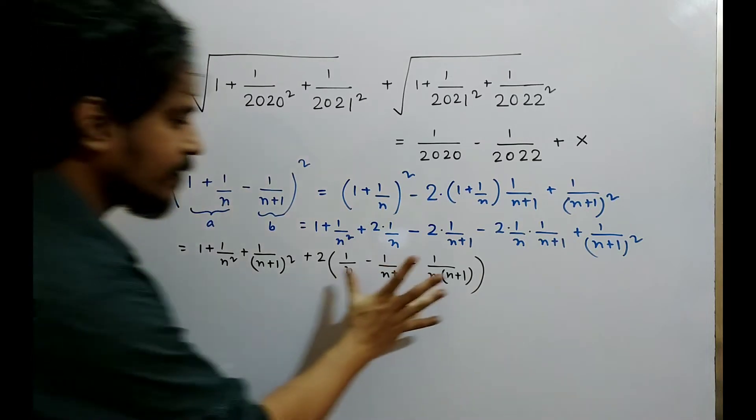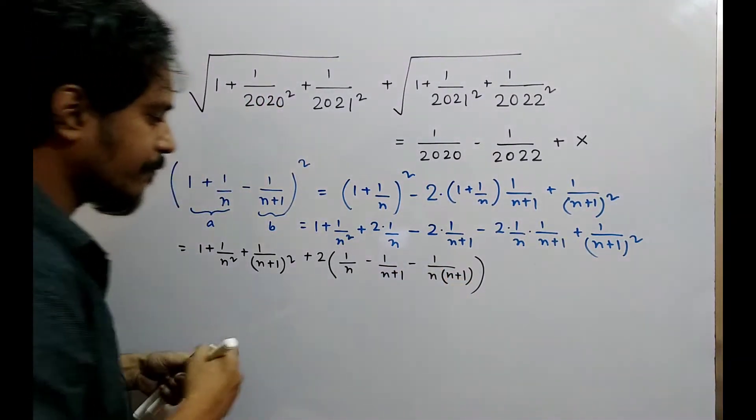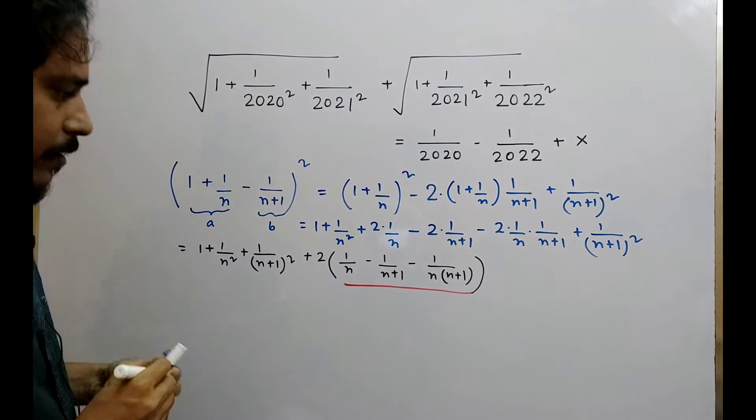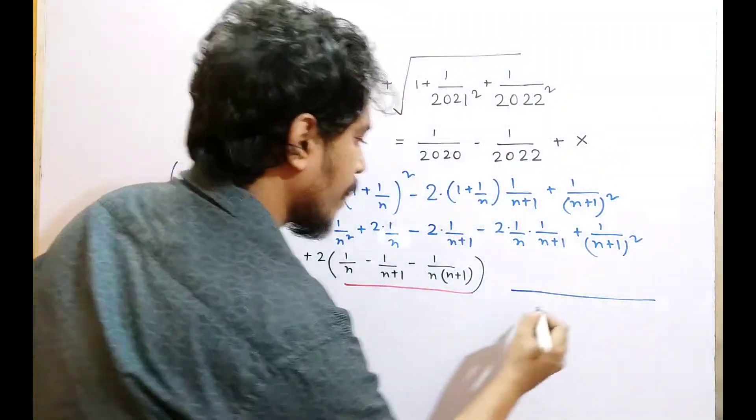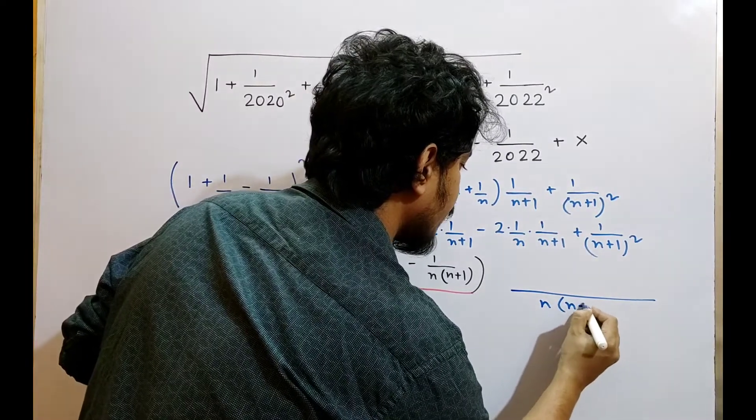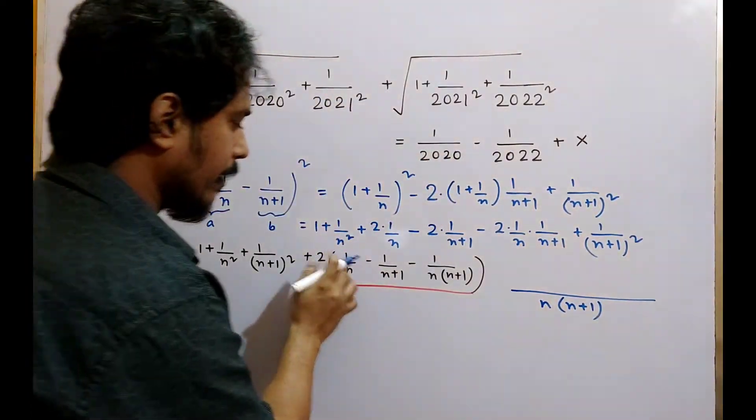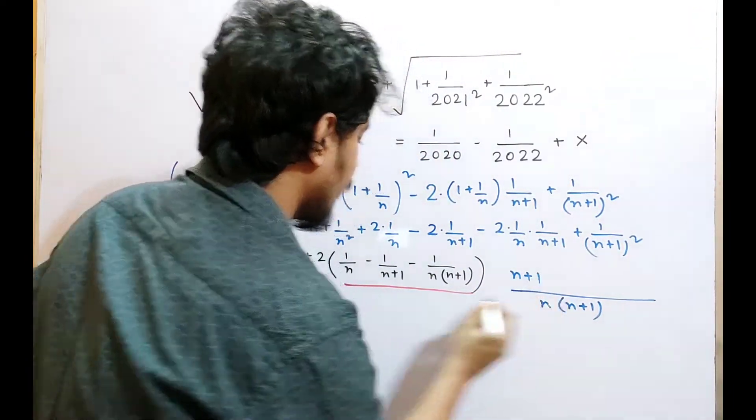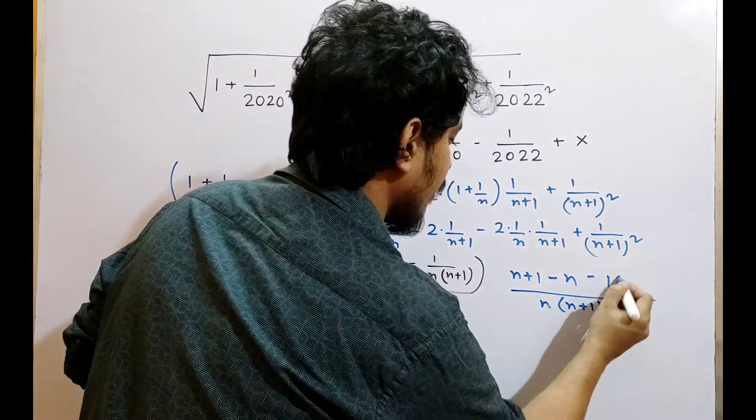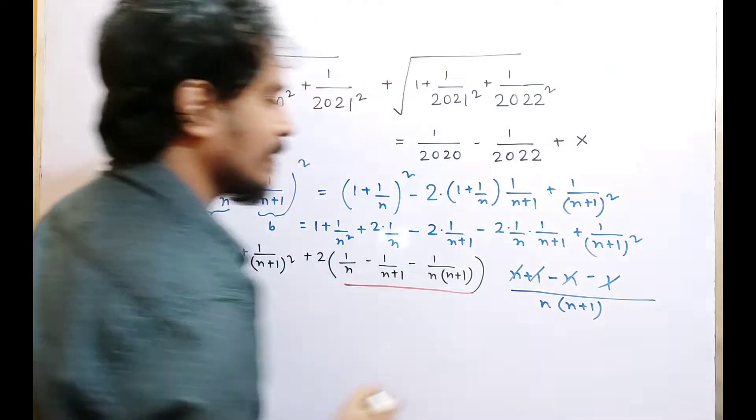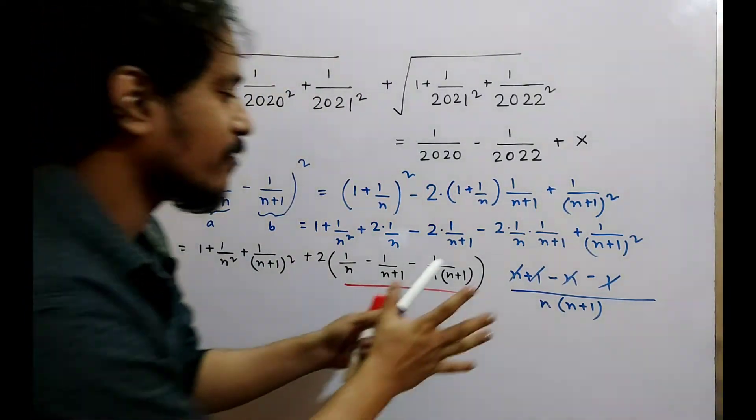If you simplify this part, what will be the LCM? n into n plus 1. Numerator me kya hai? n plus 1. Here is minus n. Here is minus 1. 1 will cancel minus n plus n cancel. So what is the result of this part? 0.